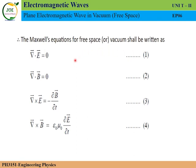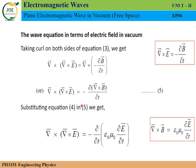Now, all of Maxwell's equations are written for free space. The first equation is del dot E equals zero. The second equation is del dot B equals zero. The fourth equation is del cross B equals epsilon-zero mu-zero times dou E by dou t.